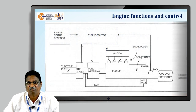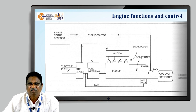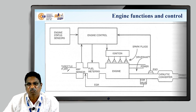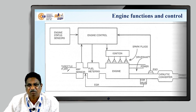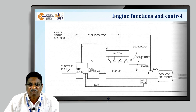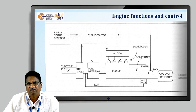Here is the detailed block diagram of engine functions and control. The upper block is engine control. The input to this engine control comes from engine status sensors, which give their output to the engine control unit. At the input there will be a throttle plate, from which air enters into the cylinder. There is also a MAF sensor — a mass airflow sensor — that senses the mass of airflow and gives it to the engine control. Accordingly, the engine control will take the appropriate action.